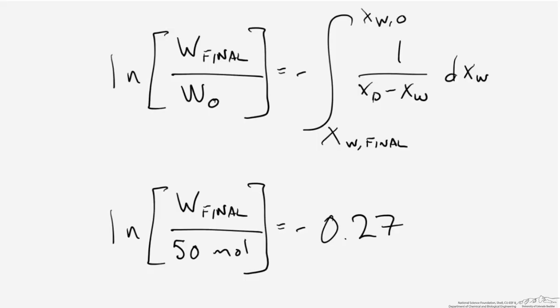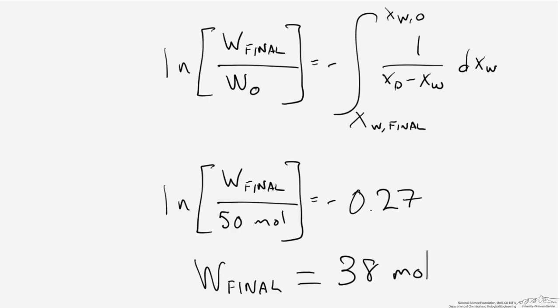When we return to the Rayleigh equation, we can substitute in our integral value of 0.027, and also insert 50 moles from our original problem statement for the starting amount of material in the still. It's then a simple matter of solving the equation to determine that the final number of moles in the pot still when we're finished with our operation is going to be 38 moles.